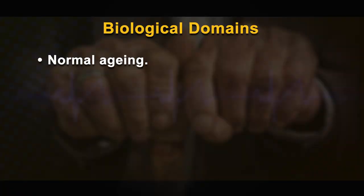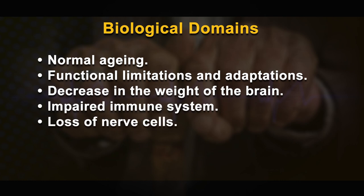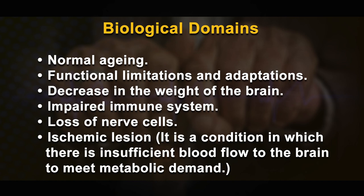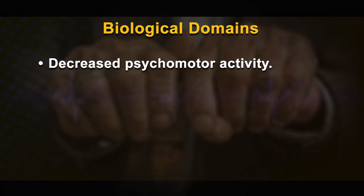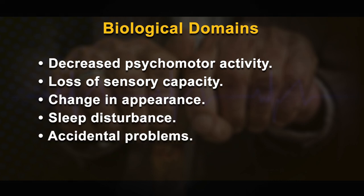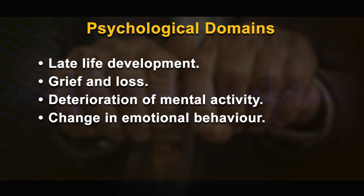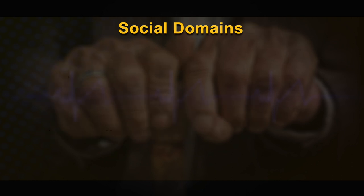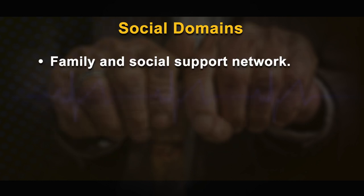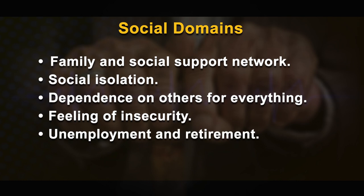The biological domains include normal aging, functional limitations and adaptation, decrease in brain weight, impaired immune system, loss of nervous cells, ischemic lesion — a condition of insufficient blood flow to the brain — decreased psychomotor activity, loss of sensory capacity, change in appearance, sleep disturbance, and accidental problems. Psychological domains include late-life development, grief and loss, deterioration of mental activity, change in emotional behavior, and personality changes. Social domains include family and social support networks, social isolation, dependence on others, feelings of insecurity, unemployment, and retirement.